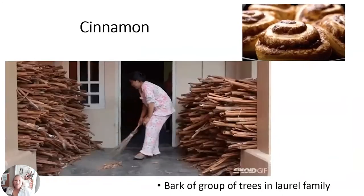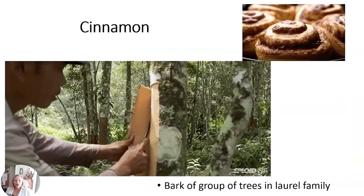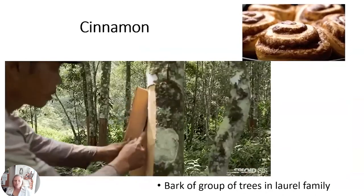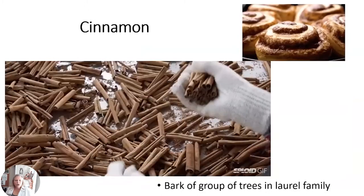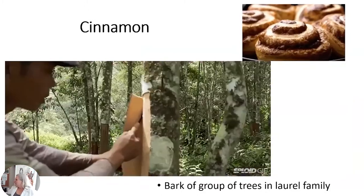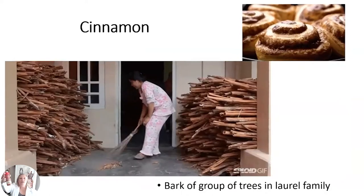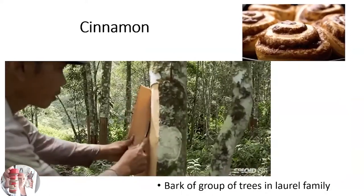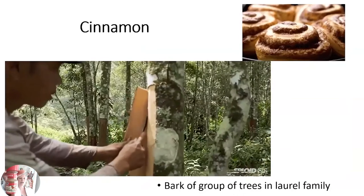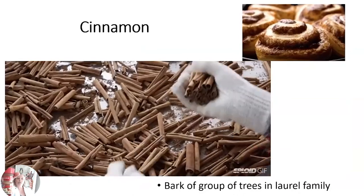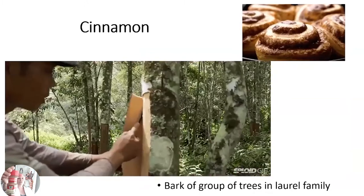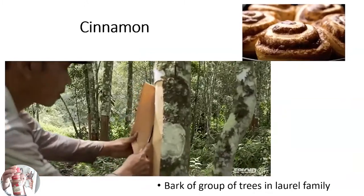Cinnamon is harvested from the bark of a tree — from the laurel family. You see those pieces of bark folded up — that's the cinnamon. Usually you find ground cinnamon in the store, but you can buy cinnamon sticks that are the bark and grind it yourself, which makes it more fresh.